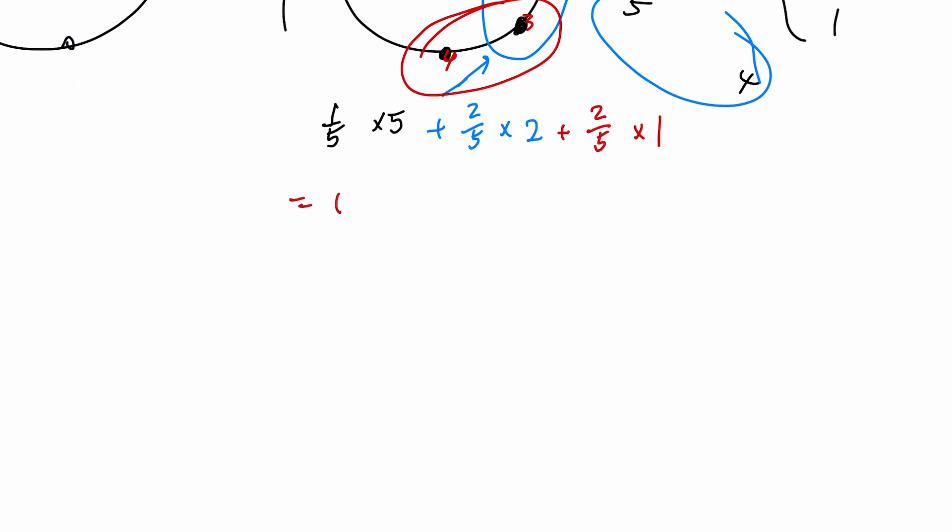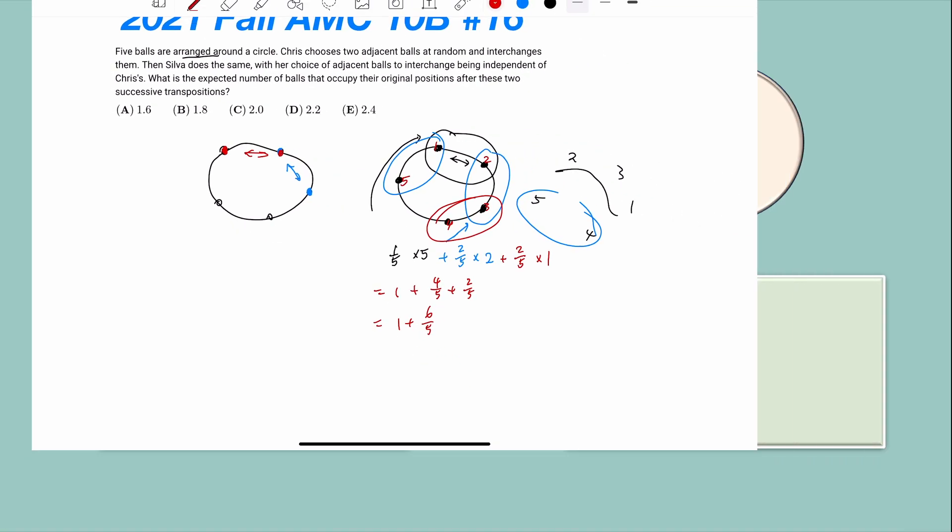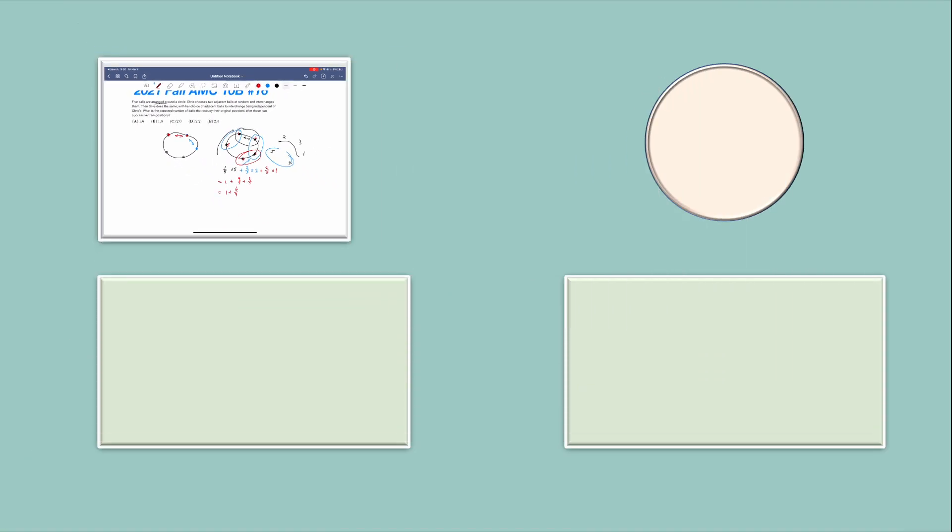Now, that is equal to one, that is equal to four-fifths, that is equal to two-fifths. If we add them up, we get one plus six over five. And unfortunately, it asks for a decimal number, which I don't really like. But if you convert this to a decimal number, you get 2.2, which gives our answer of D.